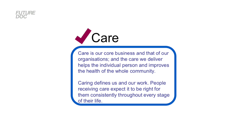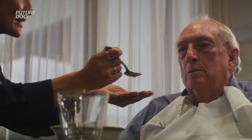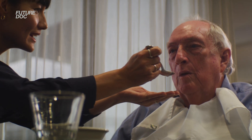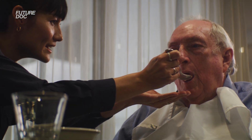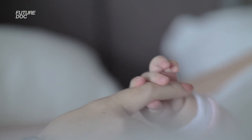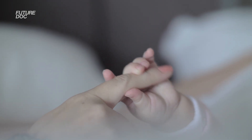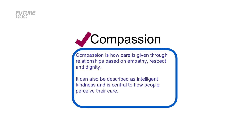The first is care. The NHS says that the care we deliver helps the individual person and improves the health of the community as a whole. The best way to demonstrate your alignment with care is by talking about any volunteer roles you've done — this could be working in a care home, looking after people, or even things like babysitting where you have to look after another person.